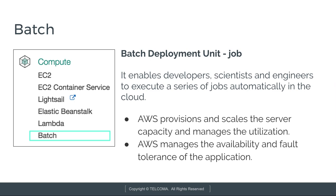AWS Batch is a set of batch management capabilities that enables developers, scientists, and engineers to easily and efficiently run hundreds and thousands of batch computing jobs on AWS. The deployment unit is a job. It enables them to run a series of jobs automatically in the cloud. AWS manages all the provisioning, availability, and fault tolerance, just like Lambda.